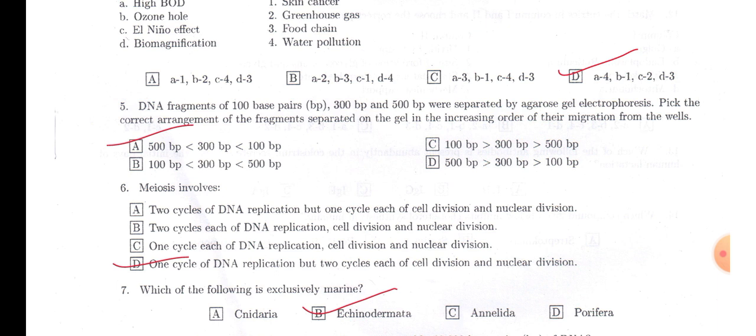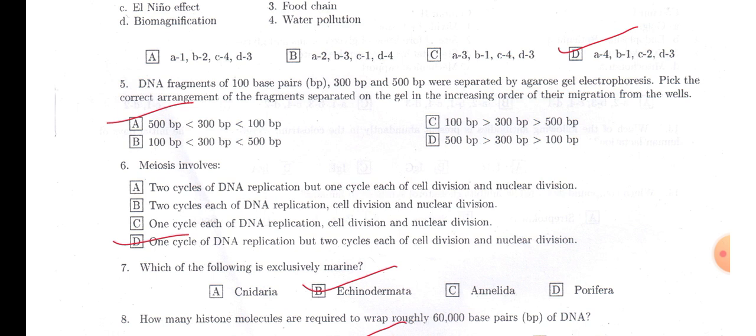In question number five, agarose gel electrophoresis has been done using different fragment sizes: 100 base pair, 300 base pair, and 500 base pair. Now you have to arrange them in increasing order from their migration from the well. So 100 base pair sequence will move further from the well towards the anode.